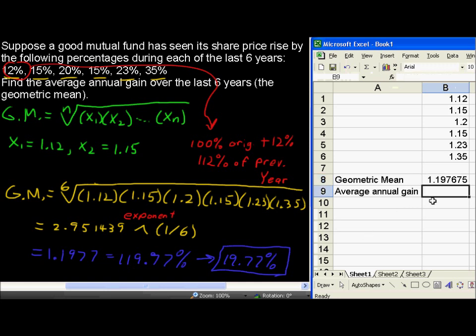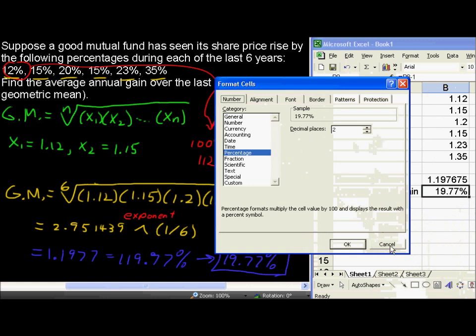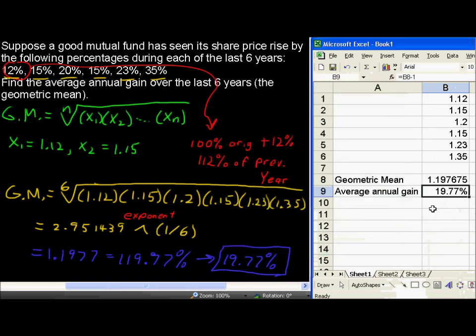So the average annual gain, I'll say equals this cell minus 1. And I've already formatted this cell as a percent. So I hit format cell and then as a percent to make it look like that right away.